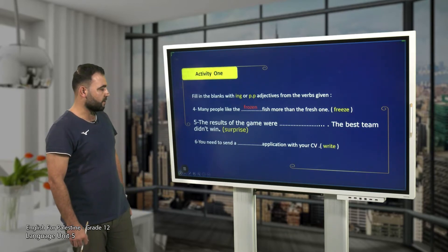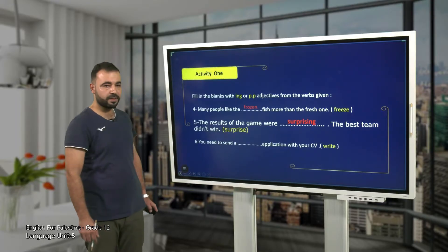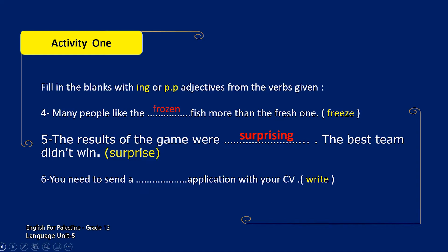Number five: the results of the game were surprising — the best team didn't win; the results of the game were surprising. And number six: you need to send a written application with your CV — the best form of 'write' here is 'written'.